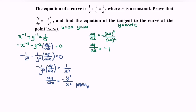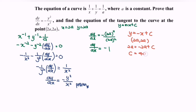Simplifying, the gradient equals negative 1. Substituting the gradient m into the equation gives y equals negative x plus c. Using the point (2a, 2a): 2a equals negative 2a plus c, so c equals 4a. Finally, the equation of the tangent to the curve at the point (2a, 2a) is y equals negative x plus 4a.